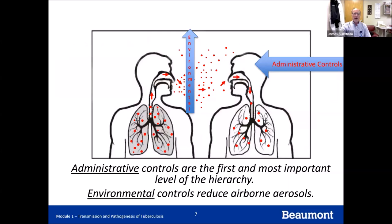Going back to the CDC slide, I've added a blue arrow pointing at the brain of the vulnerable person — representing administrative controls. We want that person thinking about TB so they can implement protection. The vertical arrow represents environmental controls — putting a barrier like a wall, a mask, or something between the vulnerable person and the contagious person to reduce aerosols.